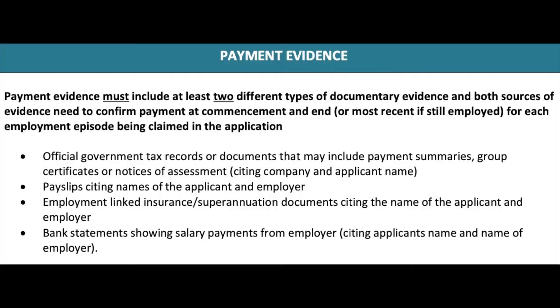ACS doesn't give a lot of value to payslips because they are second-party documents. ACS needs two out of four payment evidences listed in their checklist. If they need two out of four — not just one — and that one is only payslips, they will definitely need another one, which must be a third-party document.